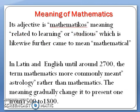Its adjective is Mathematico, meaning related to learning or studious, which likewise further came to mean mathematical. In Latin and English, until around 1700, the term mathematics more commonly meant astrology rather than mathematics. The meaning gradually changed to the present one from 1500 to 1800.